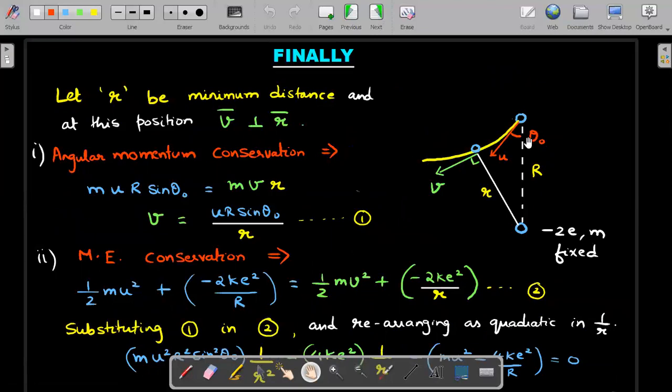Moving on to the next slide, finally we reduce the problem to this being fixed. Can you see, this is a fixed charge here, -2e and mass m. The other one is projected this way with an angle θ₀ that he mentioned in the question, 30 degrees. This yellow colored one would be the path traveled by this electron due to repulsion.